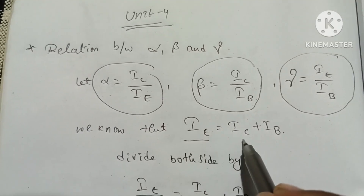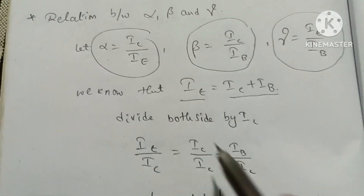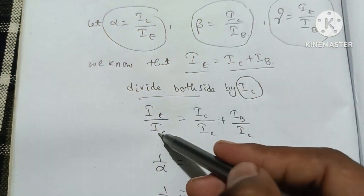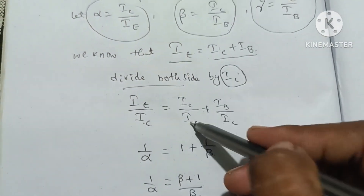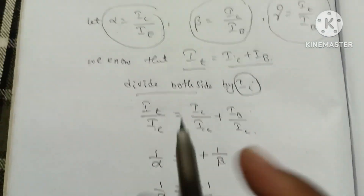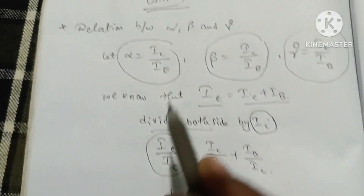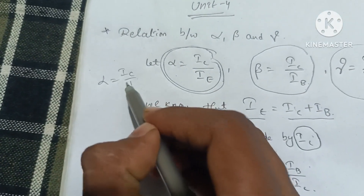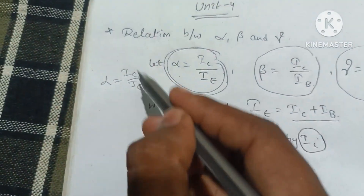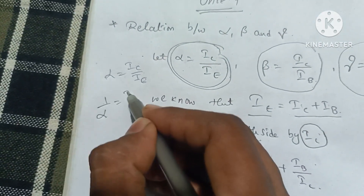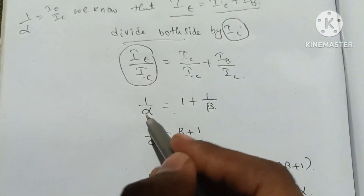We know that IE is equal to IC plus IB. Dividing both sides by IC: IE by IC is equal to IC by IC plus IB by IC. IE by IC is the reciprocal of IC by IE, which is 1 by alpha.